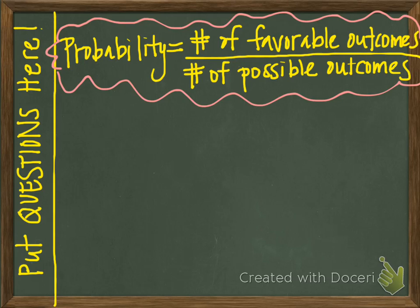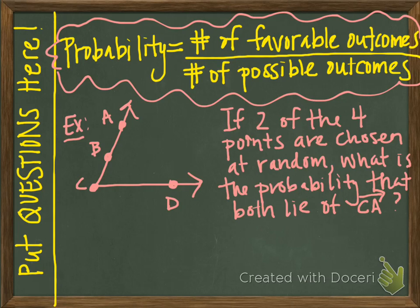If you convert probability to a percent, it will be between 0 and 100. Let's take a look at this example. We are given angle C. One side of angle C has points C, B, and A; the other side has points C and D. We are told: if two of the four points are chosen at random, what is the probability that both lie on ray CA?